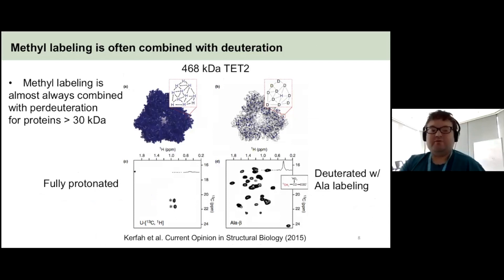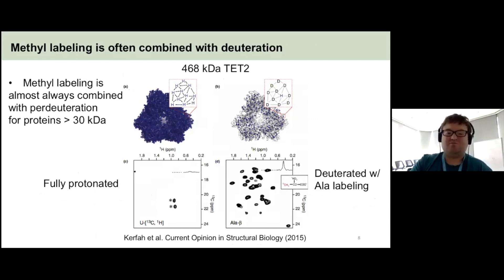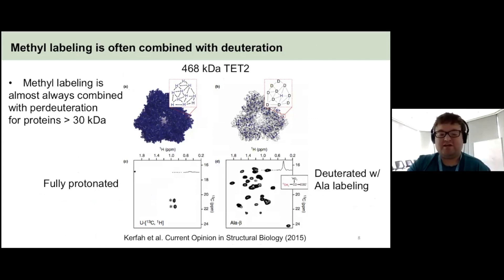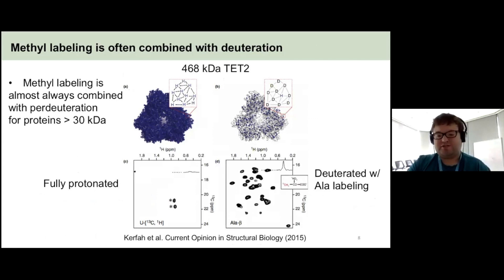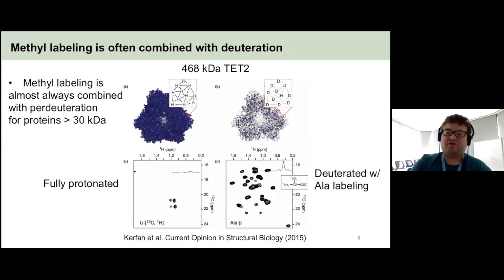Methyl labeling is often combined with deuteration. For a protein that's almost 500 kilodaltons, if you have a fully protonated sample that's not methyl labeled and you record a 2D spectrum, the only signals you get are from a very flexible and disordered termini. Whereas if you deuterate the backbone in combination with methyl labeling, you recover the bulk of your signal, because you've reduced a lot of dipole-dipole relaxation from your beta-protons.